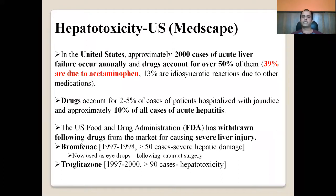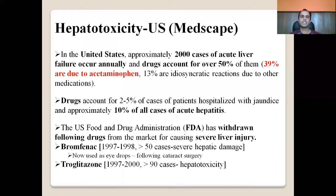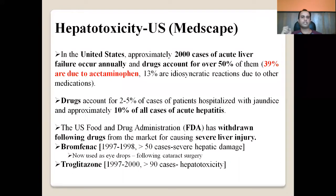Looking at US data, approximately 2,000 cases of acute liver failure occur annually, and drugs account for over 50 percent — almost 1,000 cases. Of those 1,000 cases, 39 percent are due to acetaminophen or paracetamol, and 13 percent are idiosyncratic reactions due to other medications. That means approximately 390 cases of acute liver failure annually result from acetaminophen.